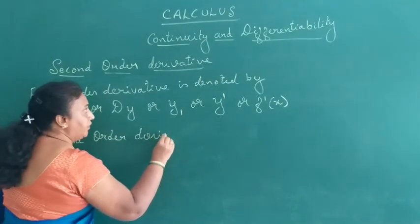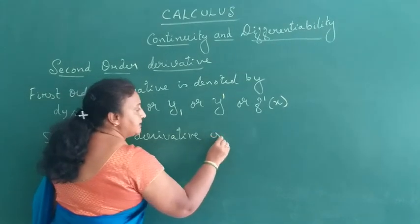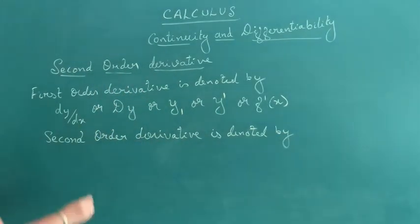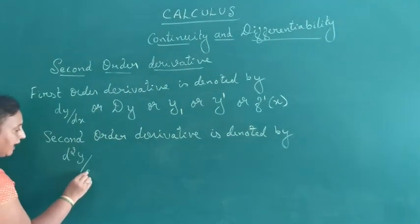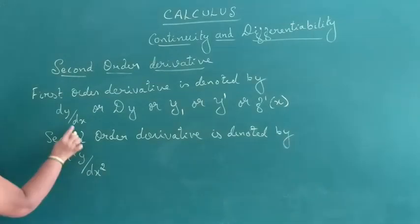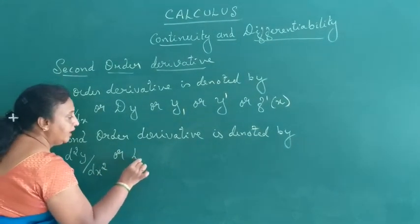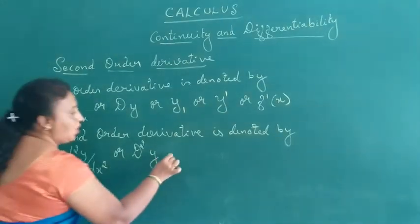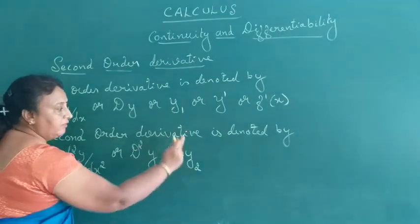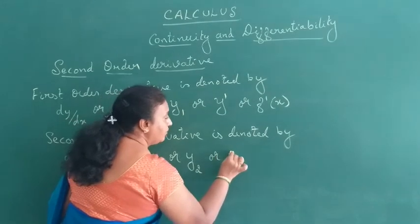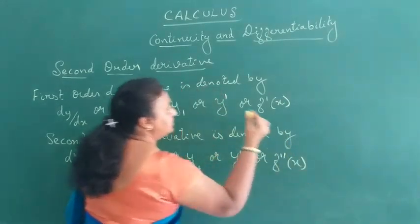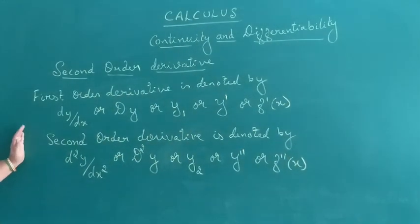The second order derivative is denoted by d²y/dx², or D²y, or y₂, or y″, or f″(x). Here y₁ is the first order derivative and y₂ is the second order derivative.